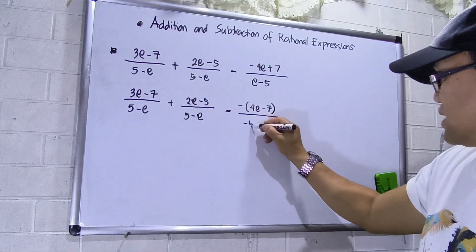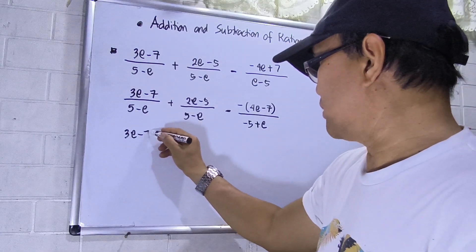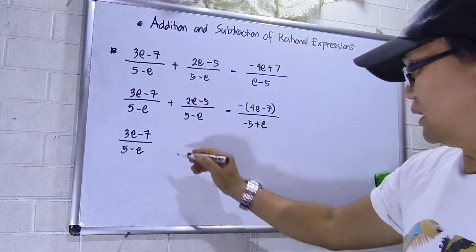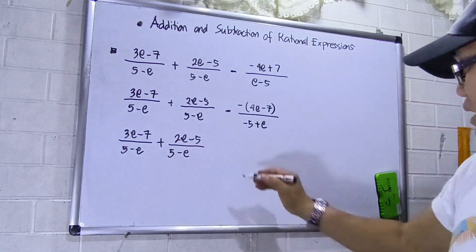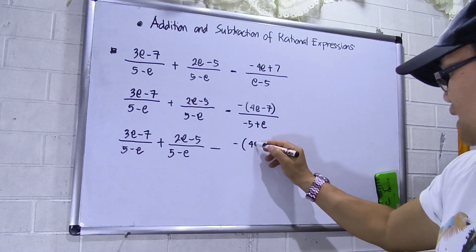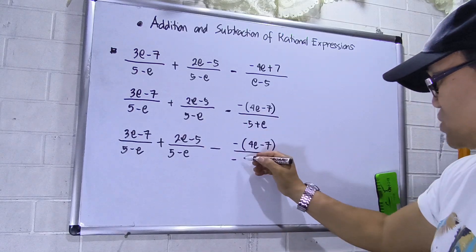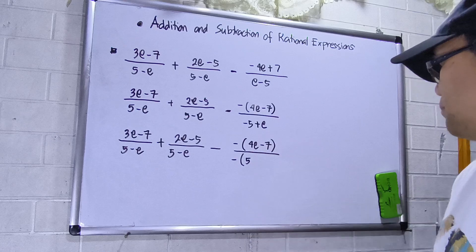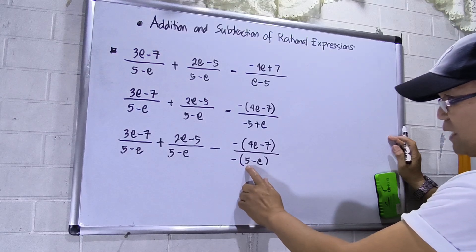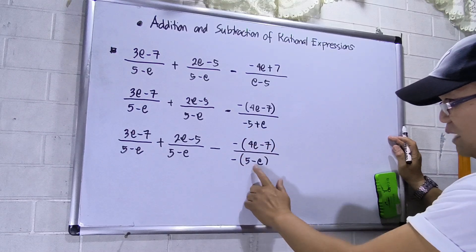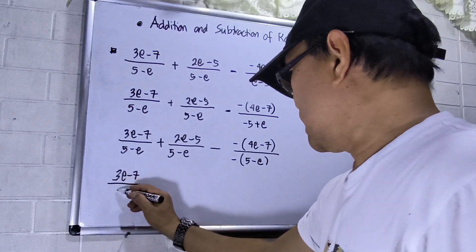To make the same denominators, I will make this one (5 − e), so this will be −5 plus e. So I'll copy: (3e − 7) over (5 − e), plus (2e − 5) over (5 − e), then the subtrahend will be minus, with circle brackets, (4e − 7) over — factoring out the negative sign — negative times 5 is −5, negative times −e is positive e.